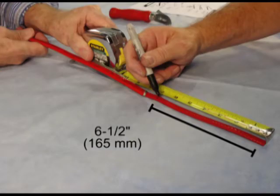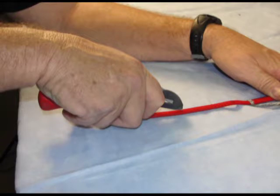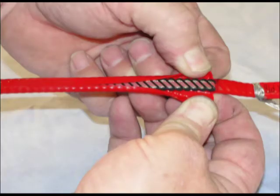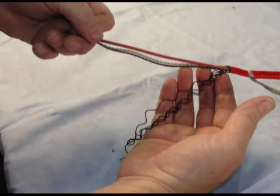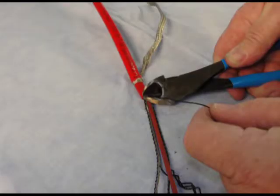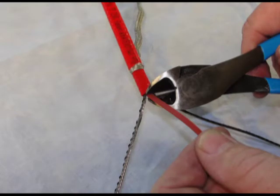Mark inner jacket at 6.5 inches. Lightly score inner jacket around and down as shown. Peel off inner jacket. Cut and remove all fiber strands.